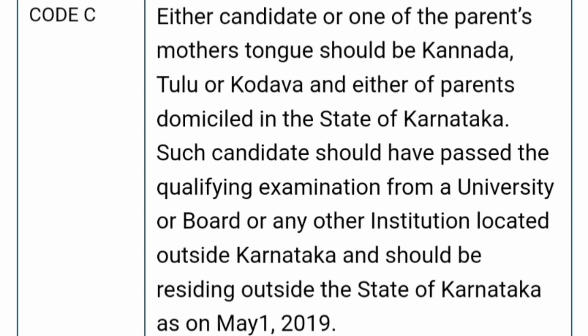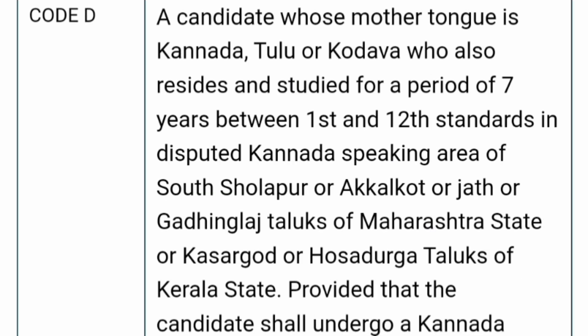You can study from anywhere outside Karnataka, but your parents should have one of those mother tongues and be domiciled in Karnataka — then you qualify for code C. Code D is for a candidate whose mother tongue is Kannada, Tulu, or Kodava, who has also resided and studied for a period of 7 years between 1st and 12th standard in the disputed Kannada-speaking areas of South Solapur, Akalkot, or Jat talukas of Maharashtra, or Kasargod, Hosdurg, and Mangalore talukas in Kerala state. Those students must write the Kannada language test to claim code D eligibility.